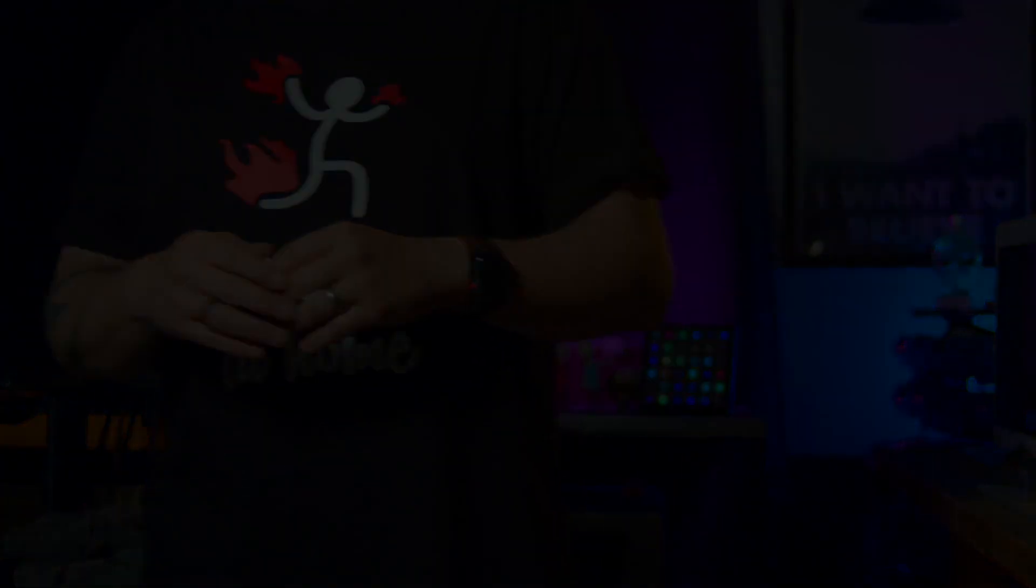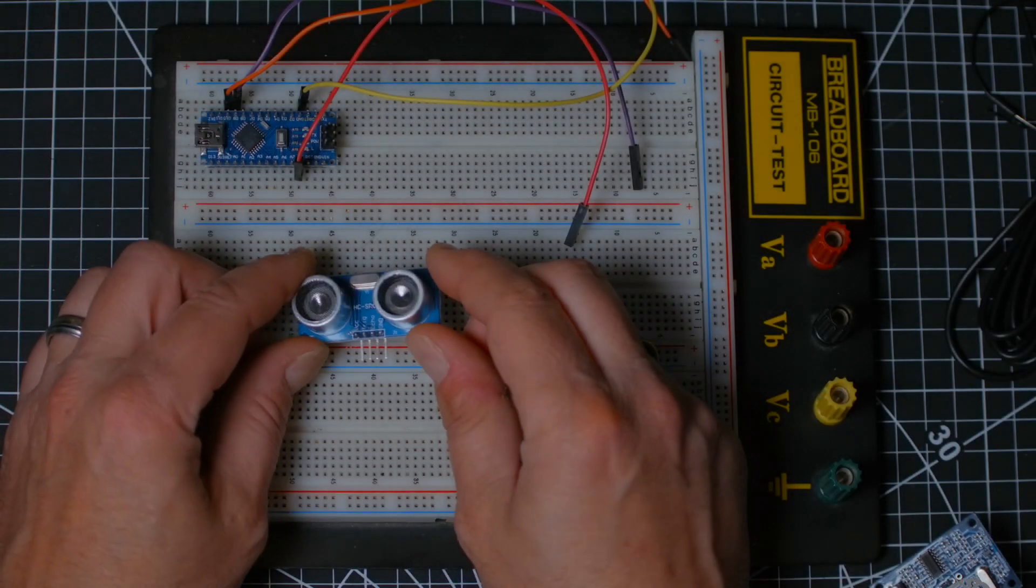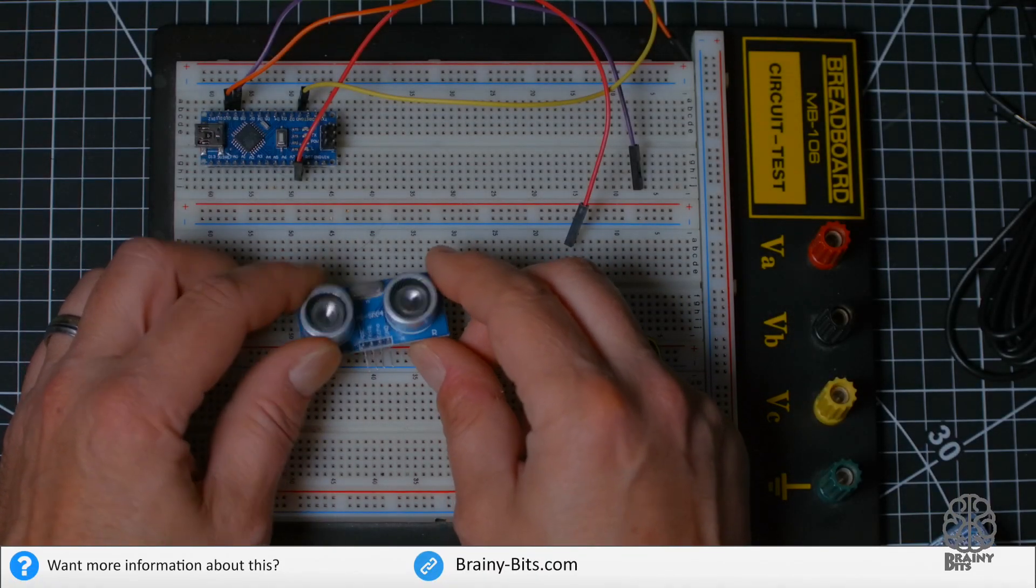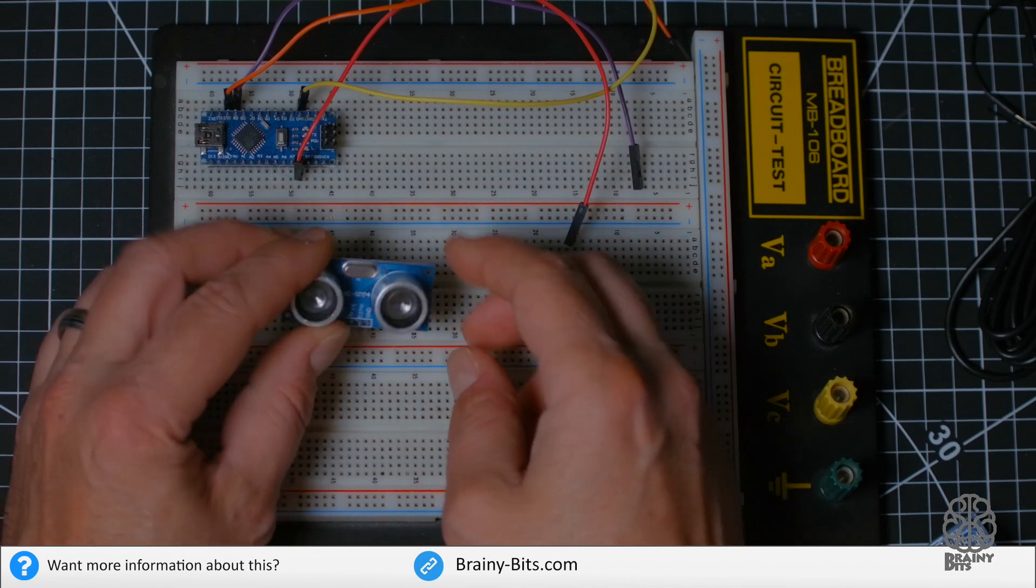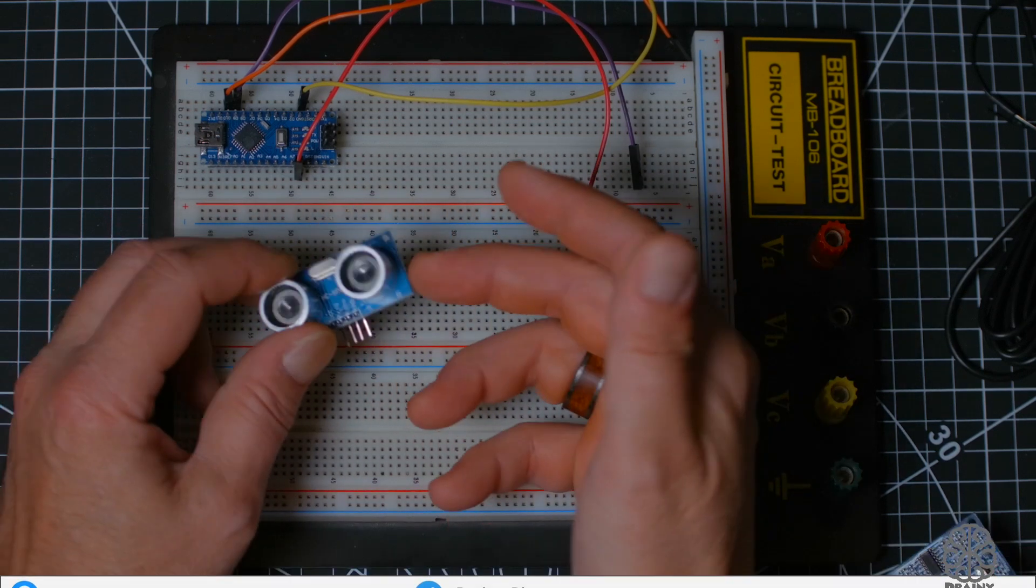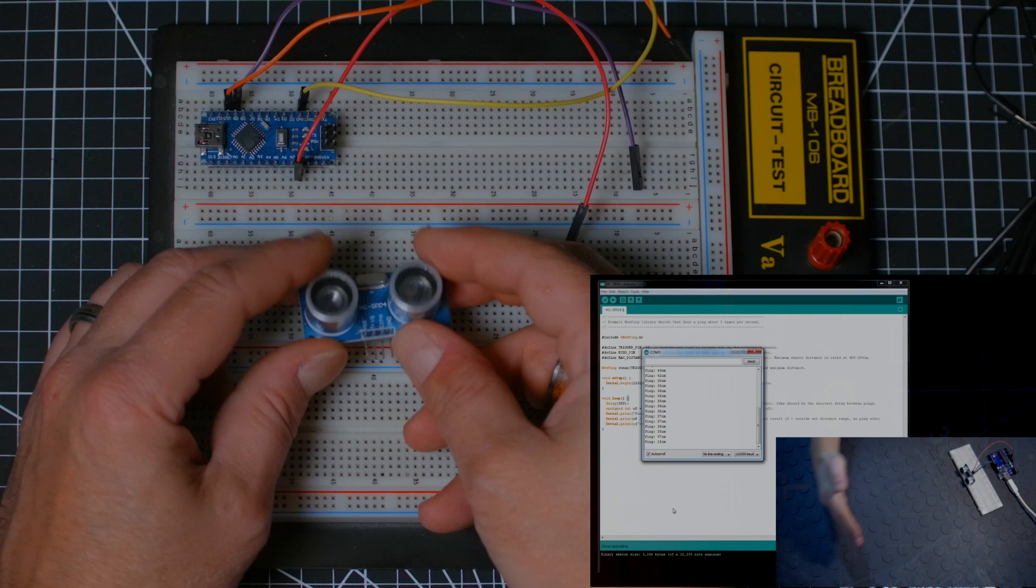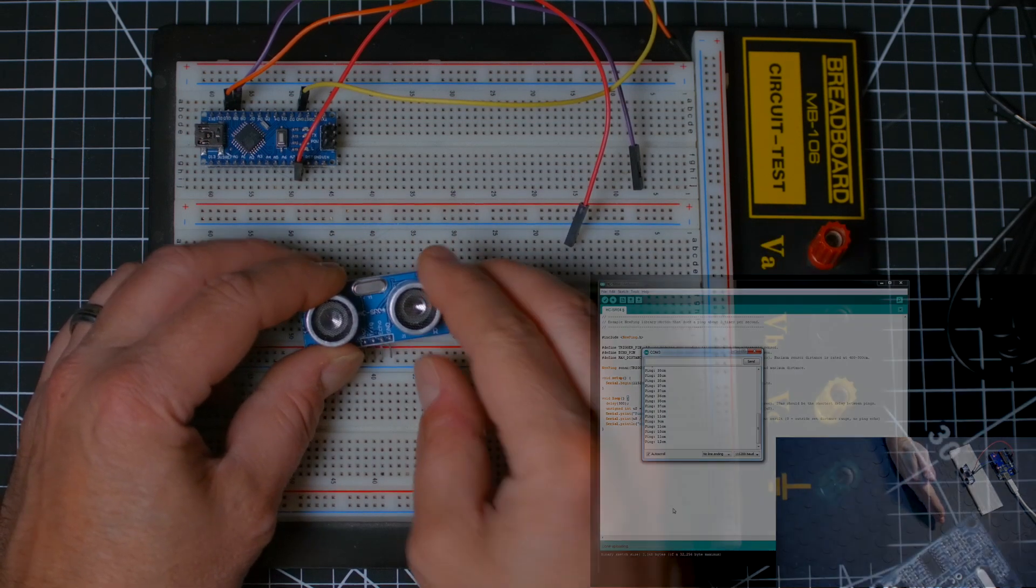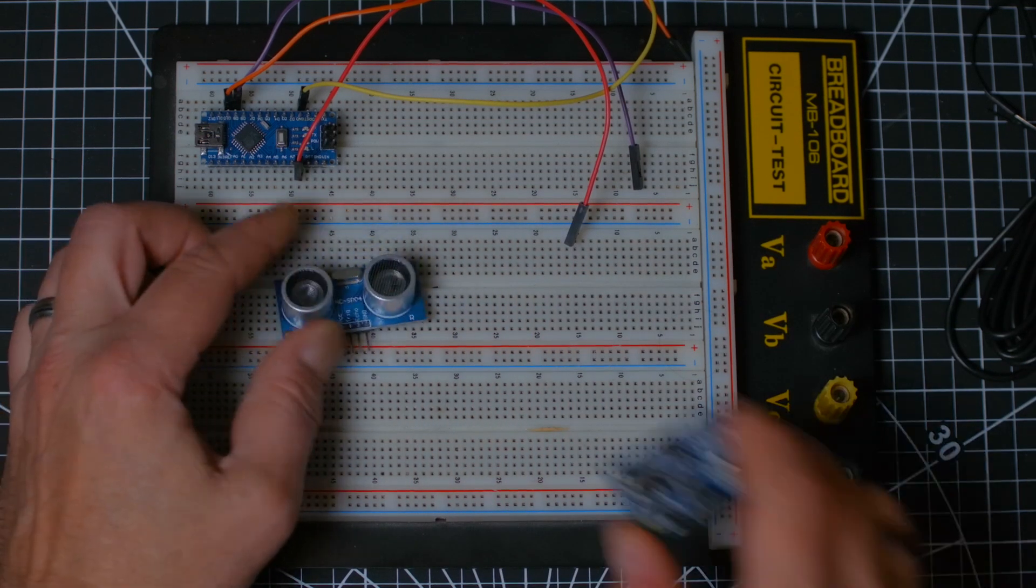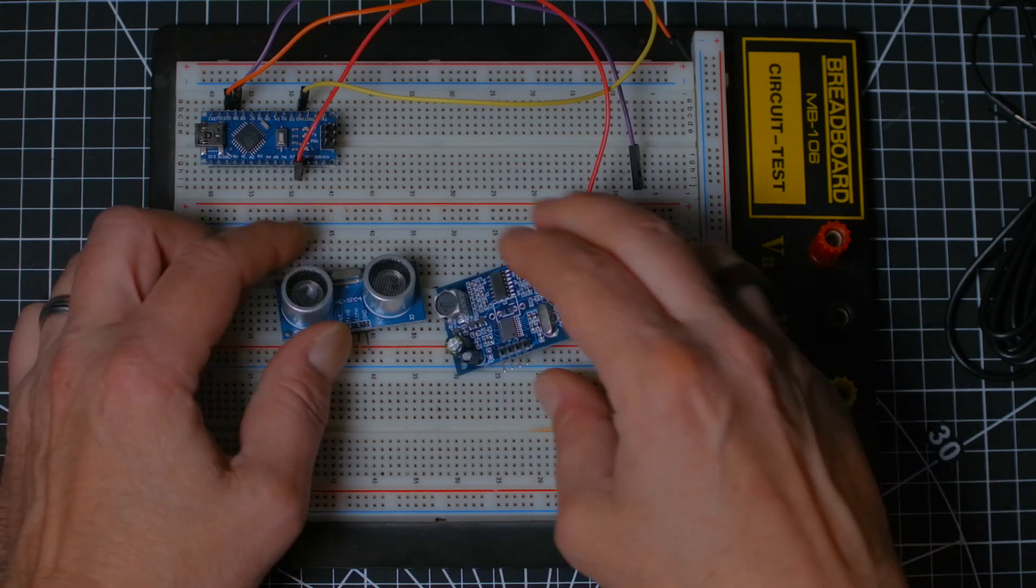Alright, so here's the sensor we're all used to, the HCS R04. These guys are very cheap, they're easy to find. I actually done a tutorial on this guy a long time ago, you can check it out here if you want.